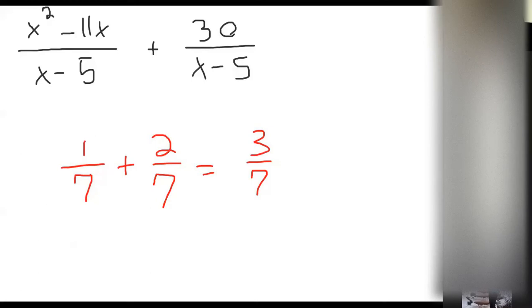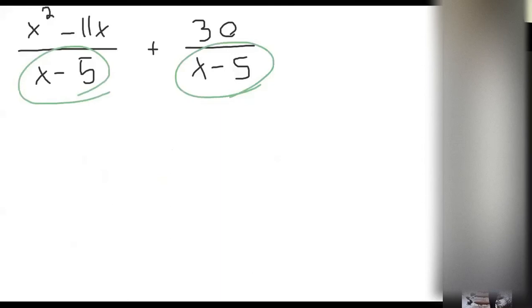So that makes me think that on the final, if you see one, it's going to be a common denominator. Alright, so you see that we have a common denominator, x minus 5 and x minus 5. So we are ready to just go ahead and put these two together.